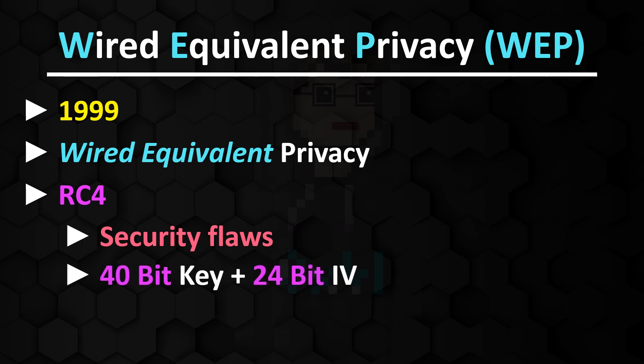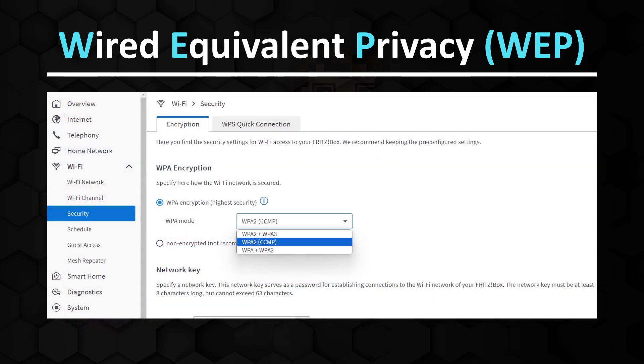The 40-bit long key in combination with the 24-bit long initialization vector can be cracked very easily. The probability of the initialization vector repeating after 5000 packets is about 50%, and if an attacker can listen in on the traffic long enough, he can break the encryption. This method is so insecure that it is almost not offered anymore, as exemplified by this snippet from my FRITZ!Box.